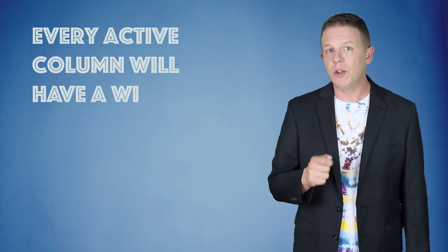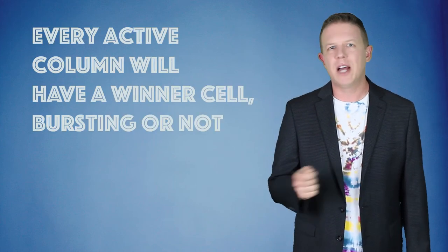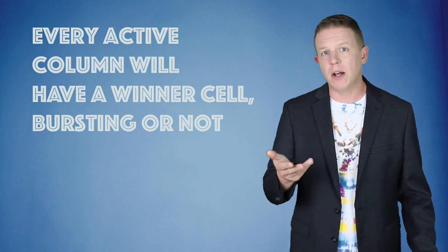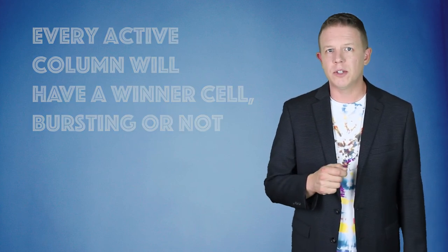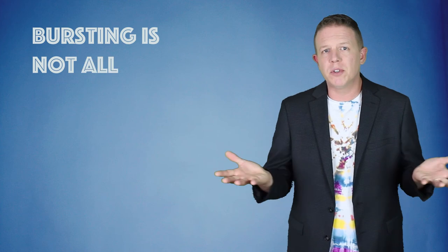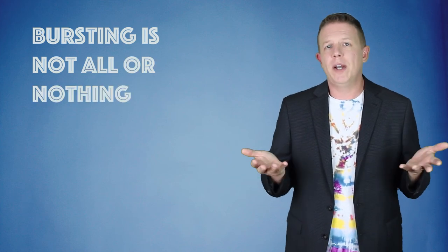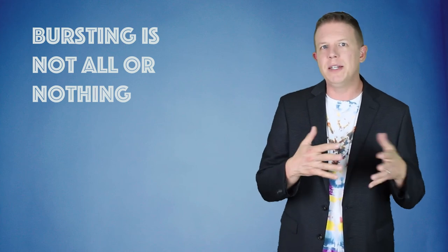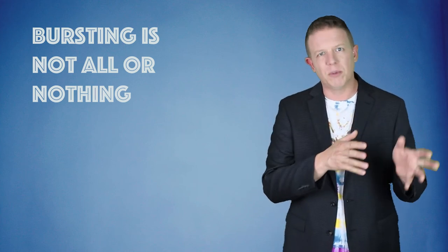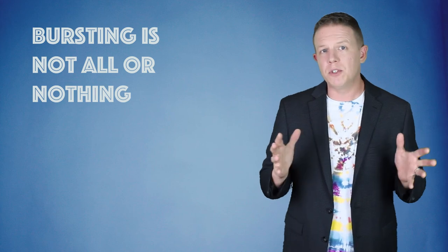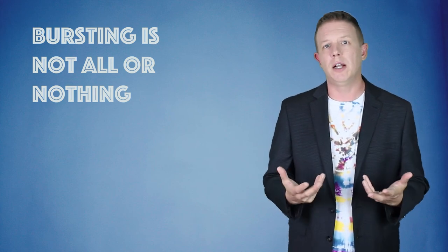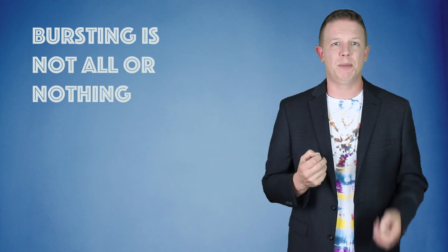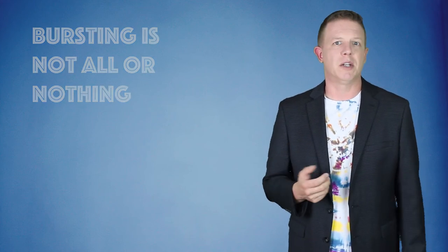And a couple of notes before we close up this episode. Every active column will have a winner cell, even if it's not bursting, in which case the winner is the active cell in the column. Also, not all columns must burst at the same time. It's quite typical for input noise to introduce bursting because this noise creates many different sequences that are still very similar. So while completely new spatial input will burst all the columns, many times subtle deviations in spatial features will only burst some of the columns.